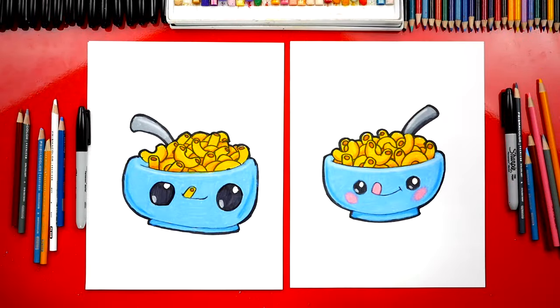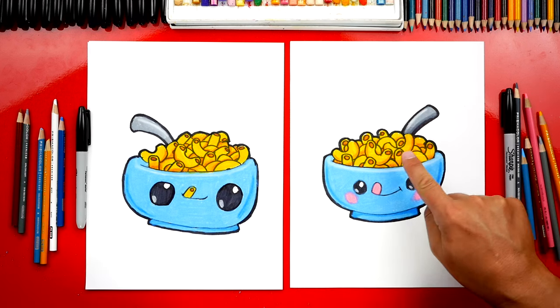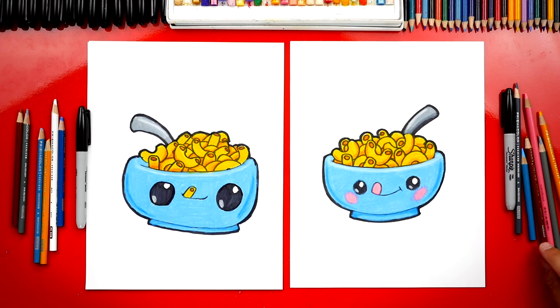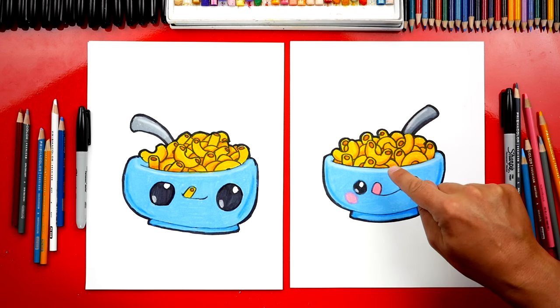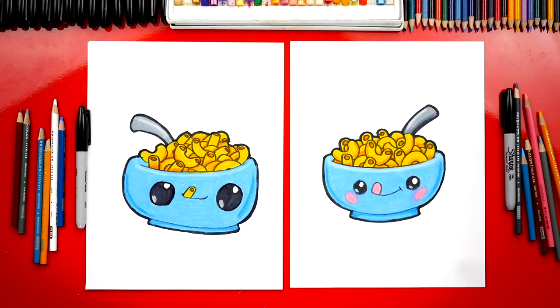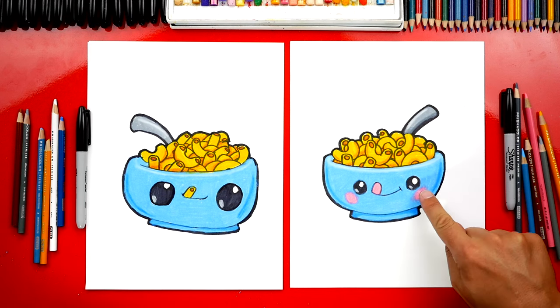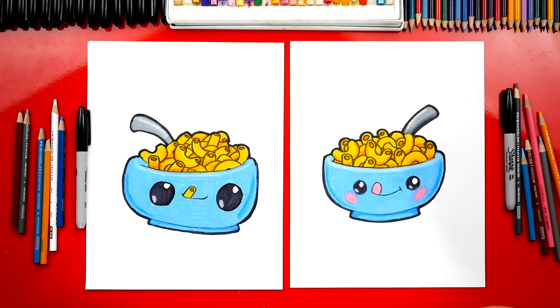Jack, good job on coloring your drawing. I hope our art friends at home are going to color their drawings also. It's so much fun. We use sunburst yellow to color the macaroni and we use a burnt ochre to add shading to make it look more three-dimensional. We also use what kind of blue for the bowl? Non photo blue. Yeah, non photo blue and then just regular pink for the cheeks and for the tongue.